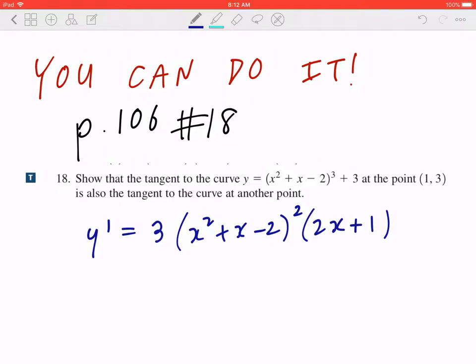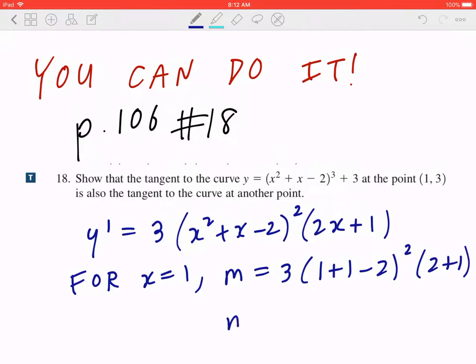If you look at the point (1, 3), which means for x = 1, the slope equals 3(1 + 1 - 2)²(2 + 1). This equals 3(0)²(3), that's going to be 0.